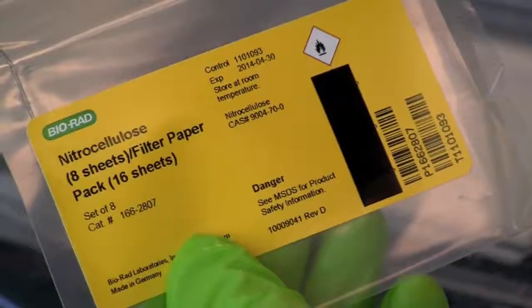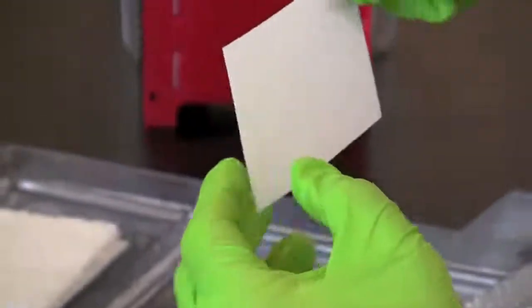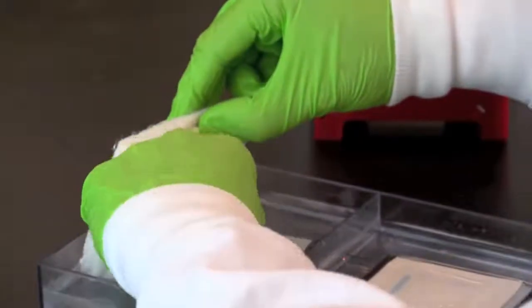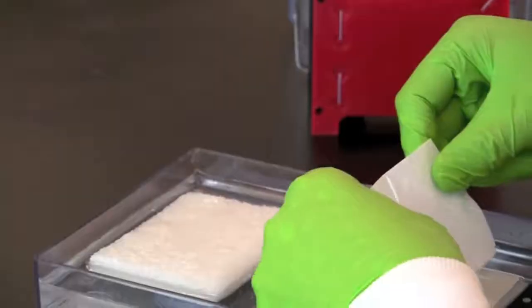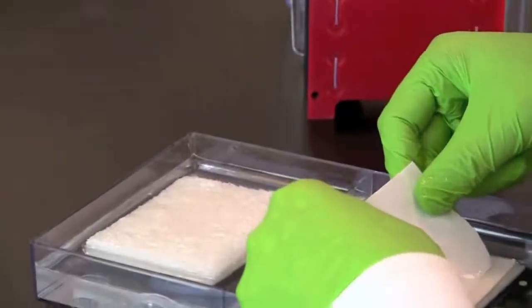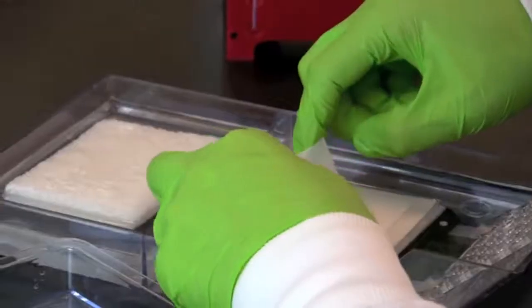Next you will be applying a piece of nitrocellulose membrane. Remove the protective sheet from the membrane and wet the membrane with blotting buffer. Carefully place the membrane squarely on the gel. Avoid moving the membrane once placed on the gel as proteins will begin to blot immediately.